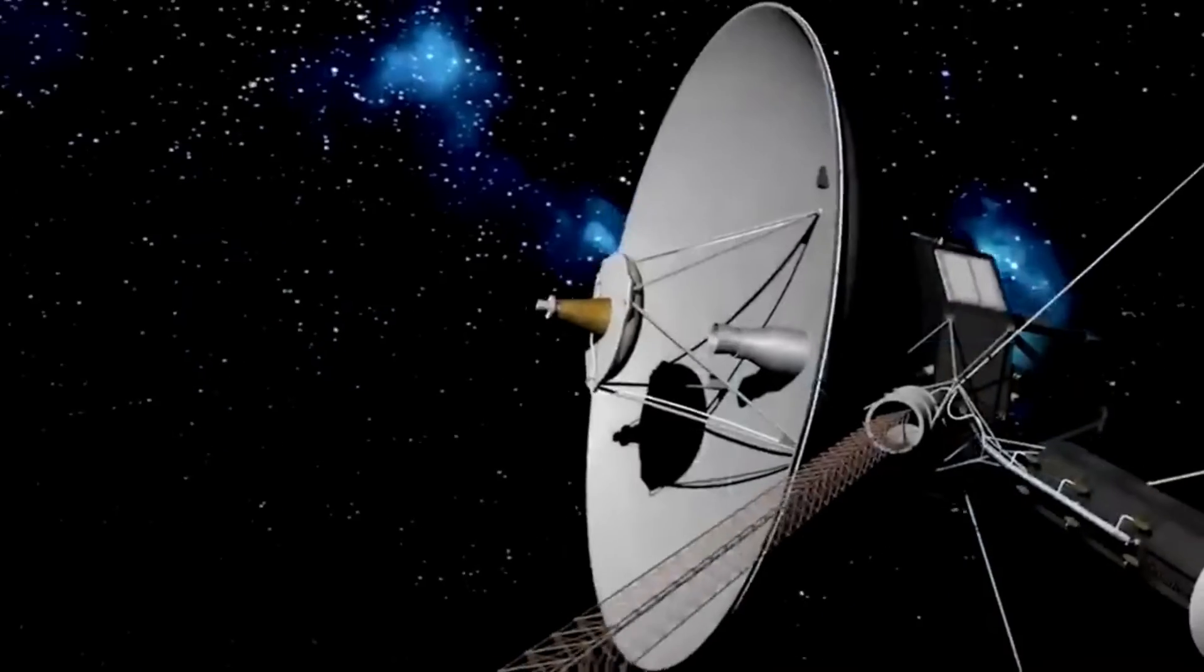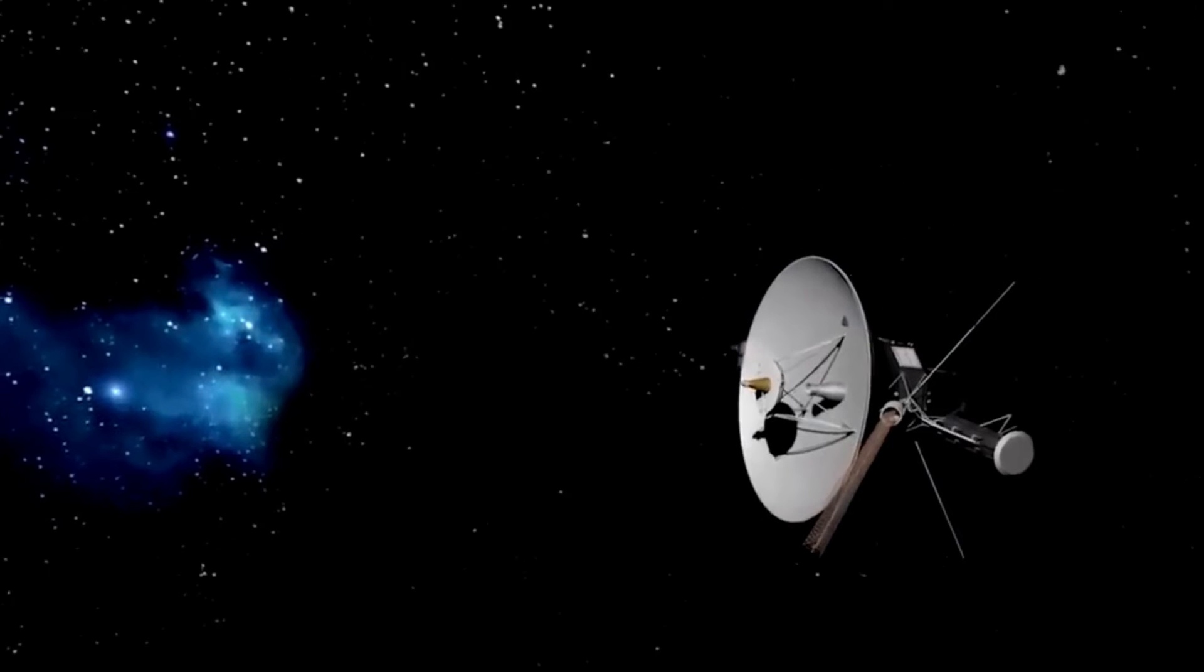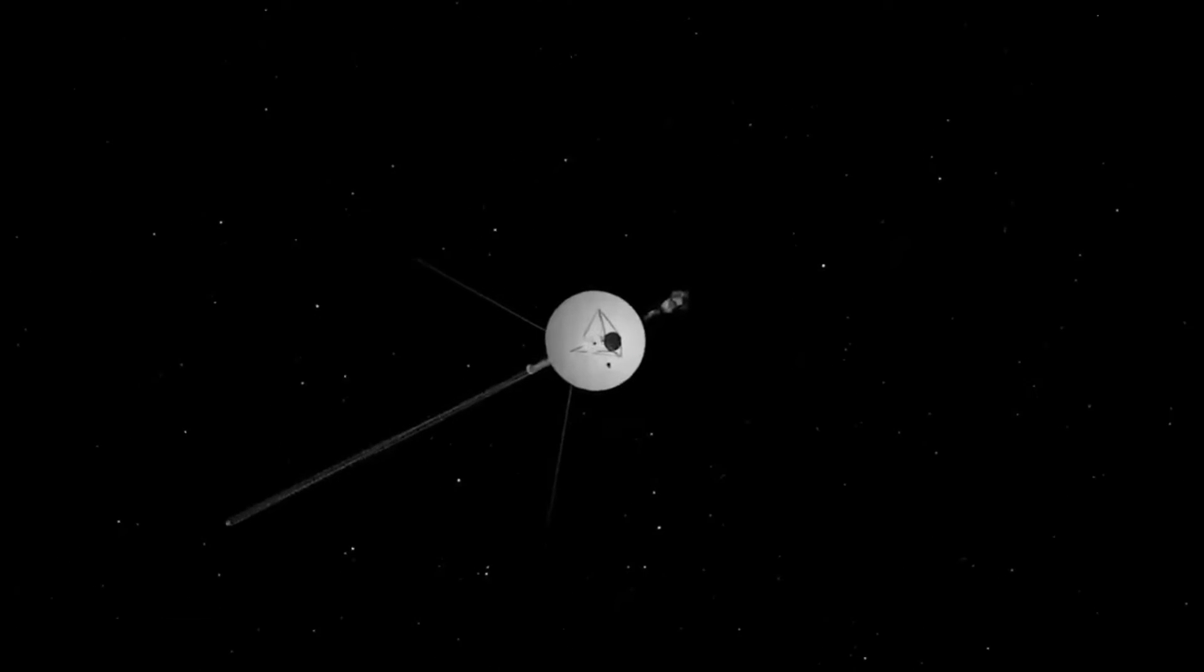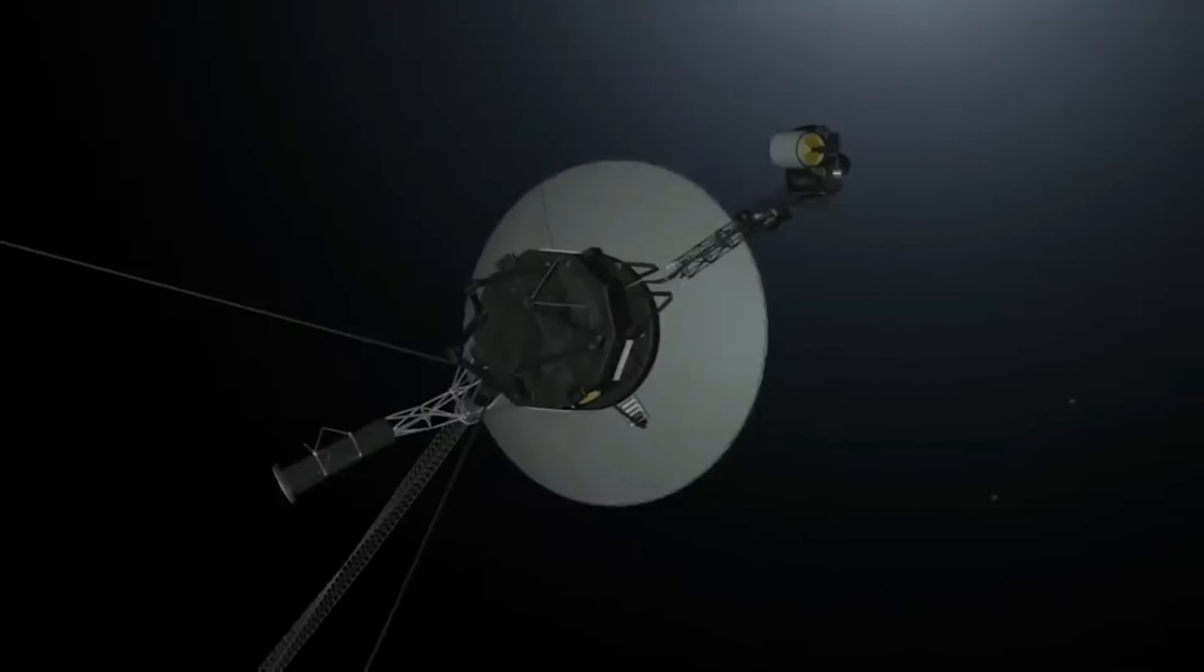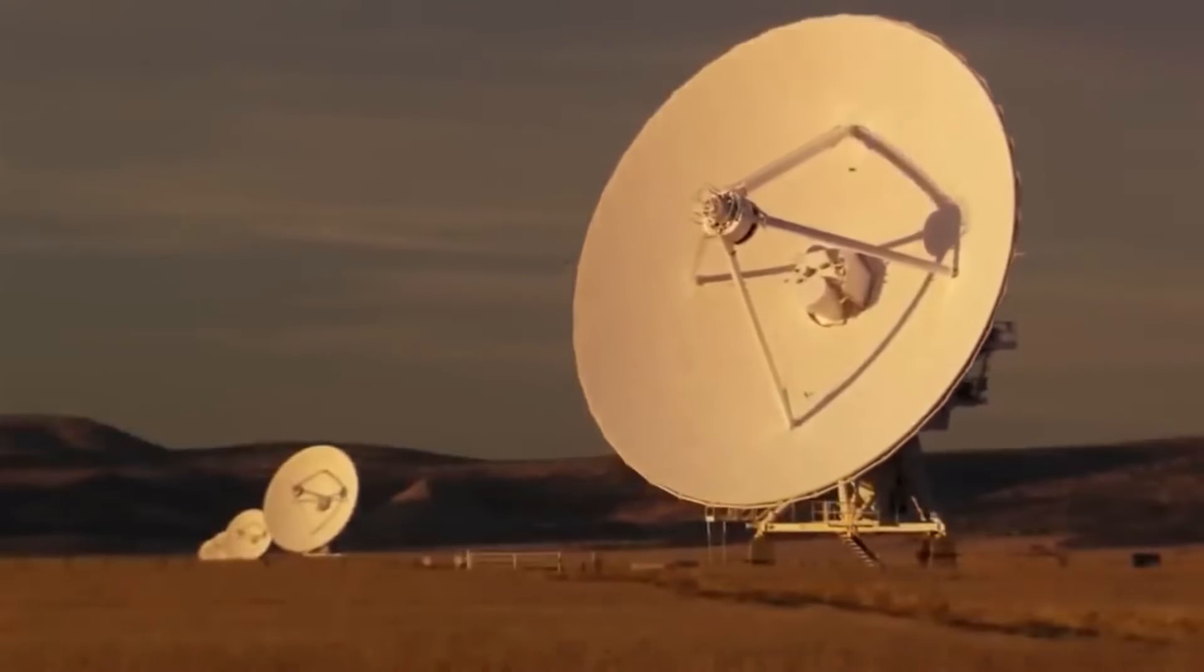One of the main challenges in understanding this anomaly is the vast distance between the spacecraft and Earth. At over 20 billion kilometers away, communication with the spacecraft is difficult and slow, with messages taking up to two days to be received after being sent.